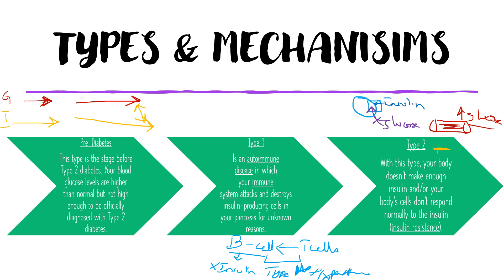Whereas in type 2, the body doesn't make enough insulin, or the body's cells do not respond normally to the insulin, which is known as insulin resistance. The cells of the body have certain membrane transporters of glucose. These membrane transporters do not attach to the cell wall, or if they do, they are not functional. Due to which, the glucose is unable to attach itself and get inside the cell — this is known as insulin resistance.